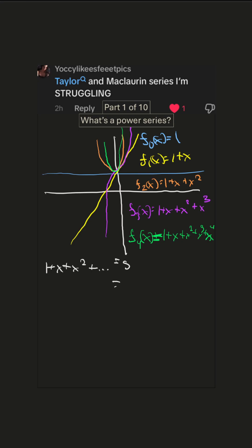We'll say that equals s. And then if we multiply s by x, that's going to be x plus x squared plus x cubed. We essentially increase the power by one.